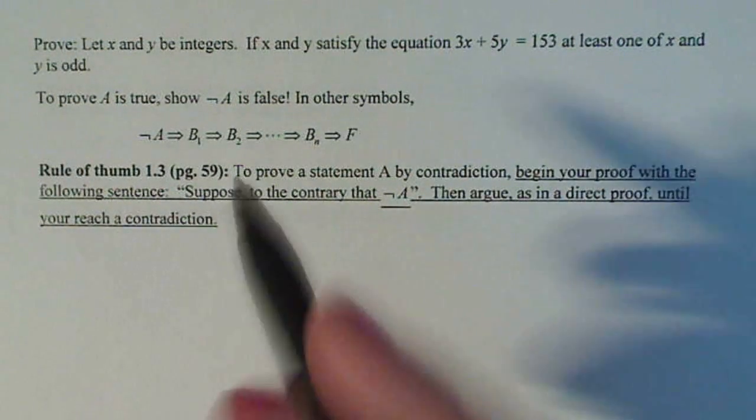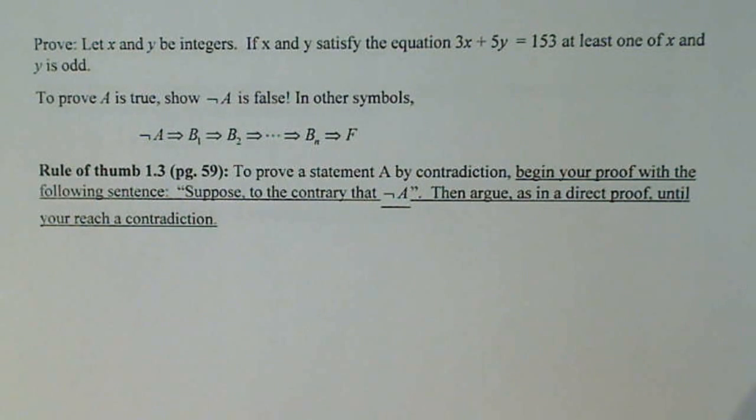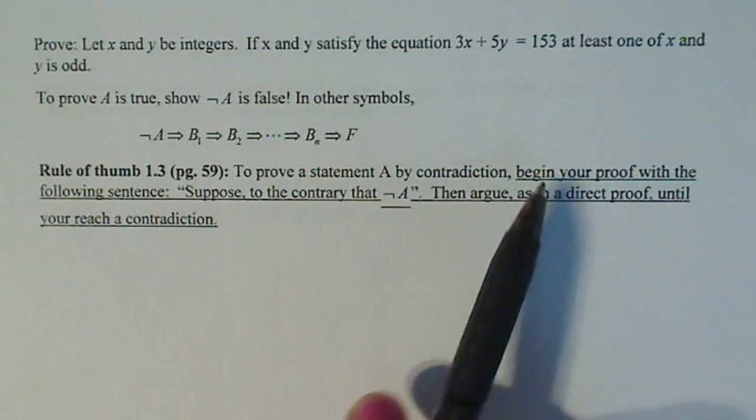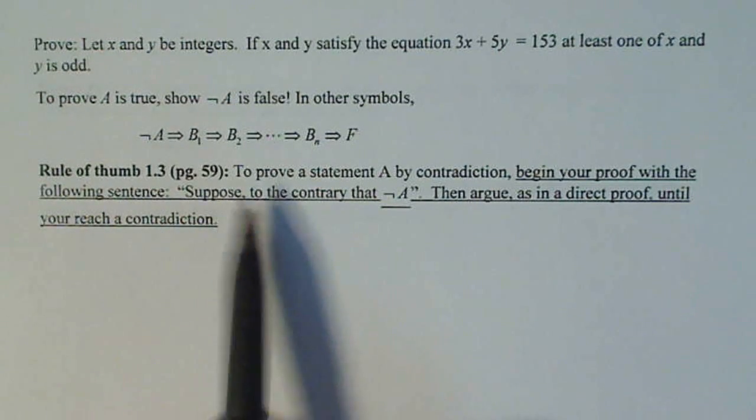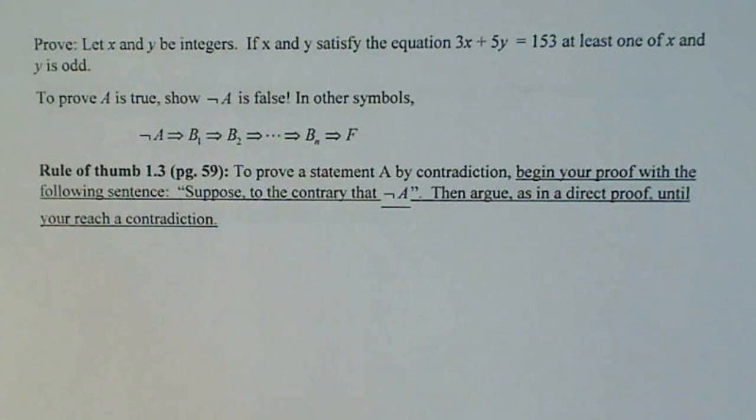So a rule of thumb is, now this is from my class, page 59 in our book, but not necessarily for your class. To prove a statement A by contradiction, this is how you begin your proof. Begin your proof with the following sentence: Suppose to the contrary that not A, then argue as in a direct proof until you reach a contradiction.